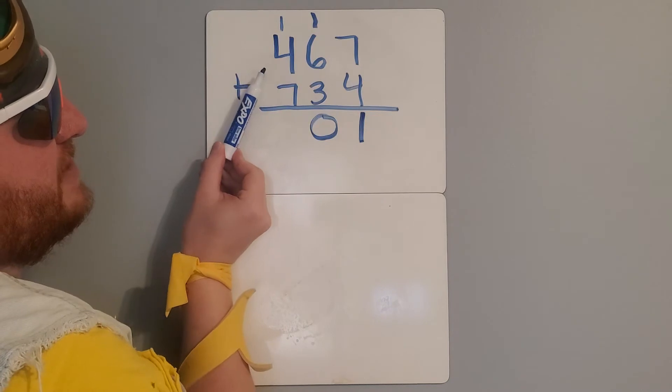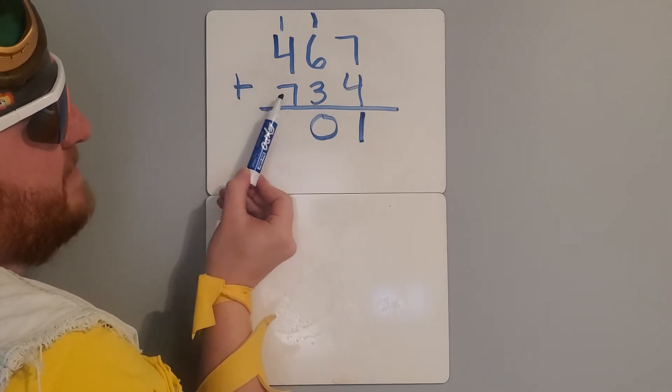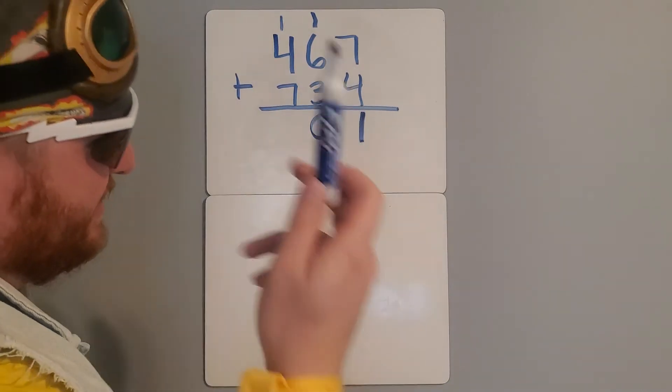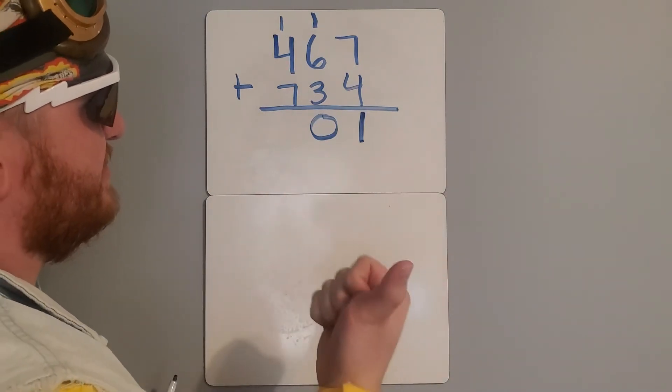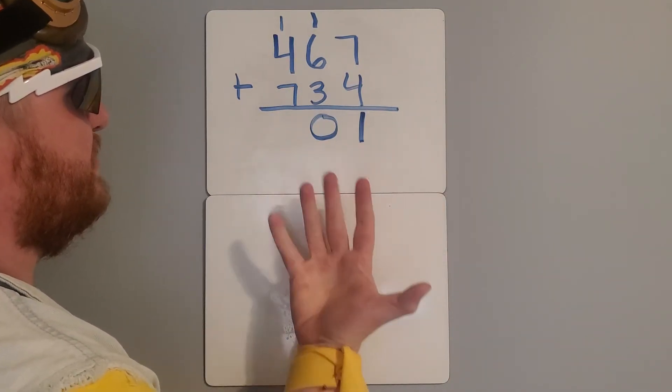1 plus 4 is 5. 5 plus 7 is, I like to put the bigger number in my head and count up, 7, 8, 9, 10, 11, 12.